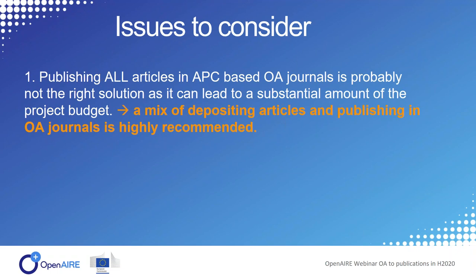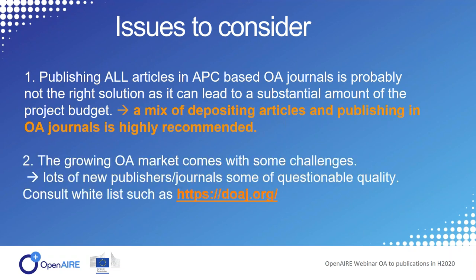An issue to consider with APCs is that if you publish all articles in an APC-based open access journal, costs may be high. So it's best to mix open access journals with depositing in a repository. Also, you might want to check the quality of your journal in the DOAJ, because with the growing open access market, some journals have questionable quality. This also goes for normal journals, but if you want to check, check DOAJ.